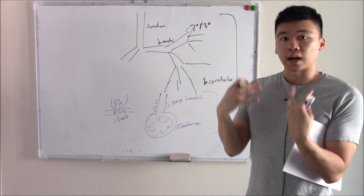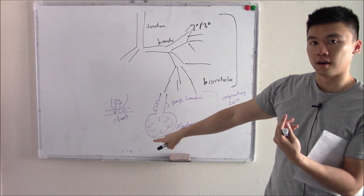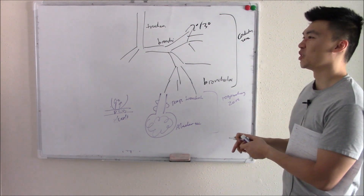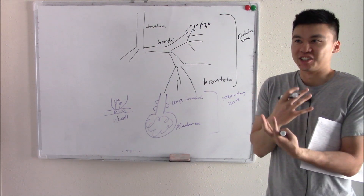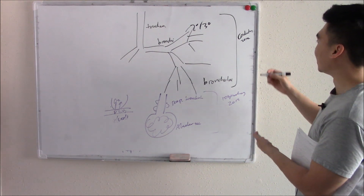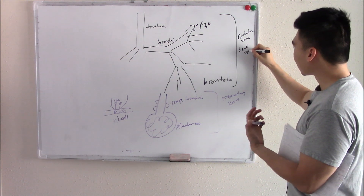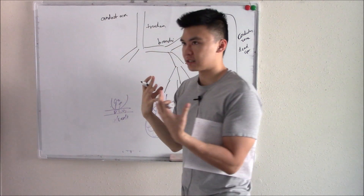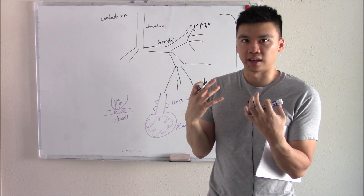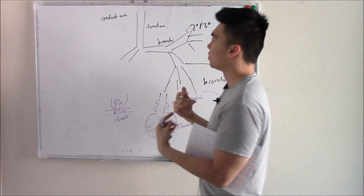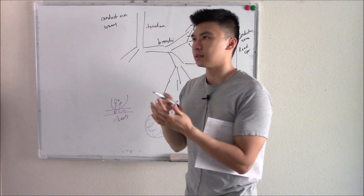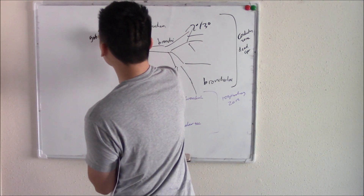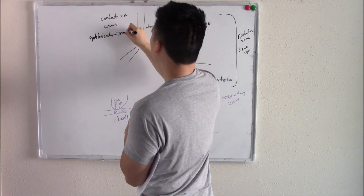By default, everything else doesn't exchange gas — it still directs and conducts air into our alveoli. We call this the conducting zone. A more blunt term for it is anatomical dead space — it doesn't do gas exchange, but it still has its function: it conducts and directs air, humidifies air, and warms it. Probably most importantly, it helps filter air using goblet cells, which release mucus that traps particles.